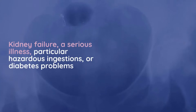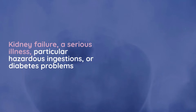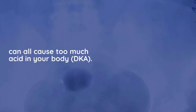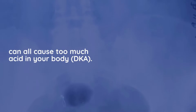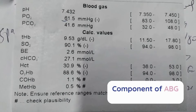It is also used to make sure your acid-base balance is in order. Kidney failure, a serious illness, particular hazardous ingestions, or diabetes problems can all cause too much acid in your body. In this topic, we will discuss different components of ABG.